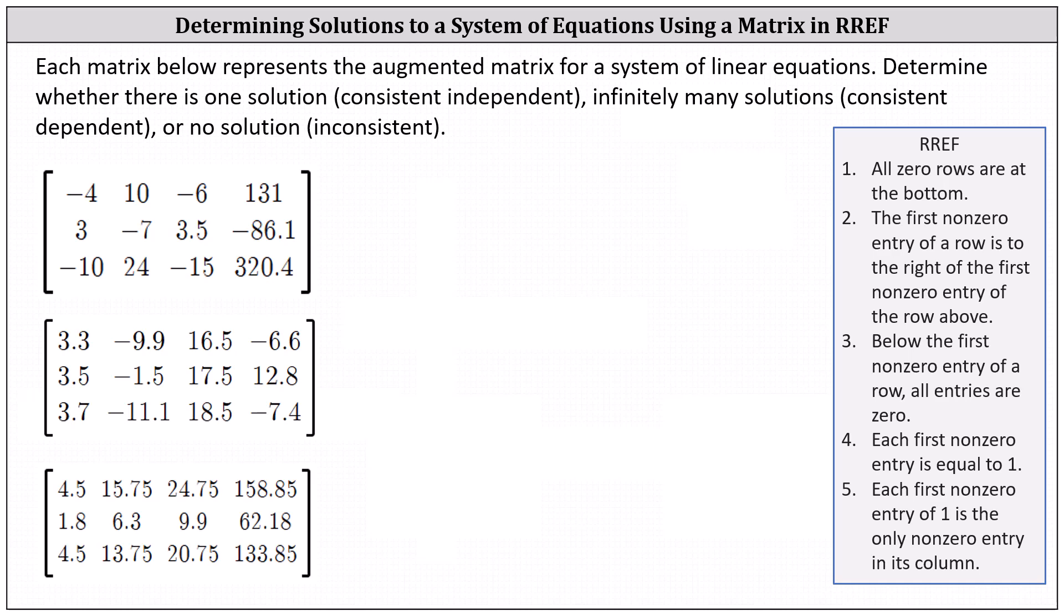If the variables are x, y, and z, then the first column represents the coefficients of x, the second column represents the coefficients of y, the third column represents the coefficients of z, and the fourth column represents the constants on the right side of each equation. Each row represents an equation.